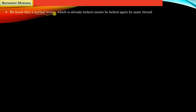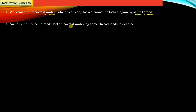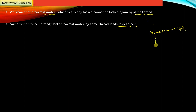We know that a normal mutex which is already locked by a thread cannot be locked by the same thread again. Any attempt to lock an already locked normal mutex by the same thread leads to a deadlock. For example, suppose you have a thread T1 that is executing and at some point it obtains a lock on a mutex — let's say M represents a normal mutex.